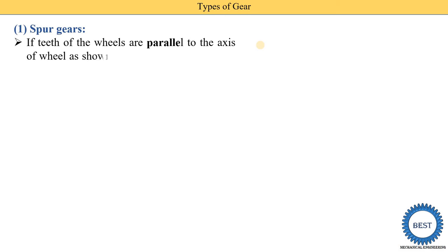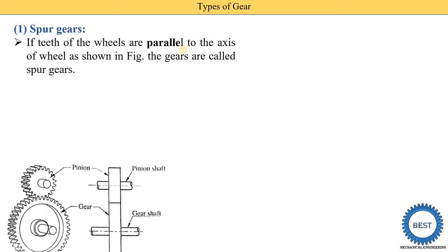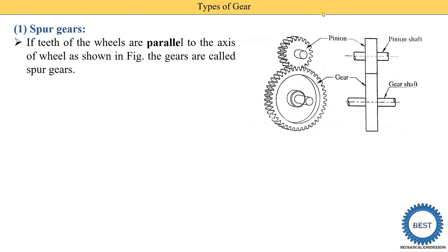First we start with the spur gear. In every gear, teeth are provided, and in various types of gear the teeth shape is different. If the teeth of the wheel are parallel to the axis of the wheel, as shown in the figure, the gear is called a spur gear. Here you see two spur gears — a driving gear and a driven gear, also called the pinion. The teeth of the gear are horizontal, meaning parallel to the axis of the shaft.